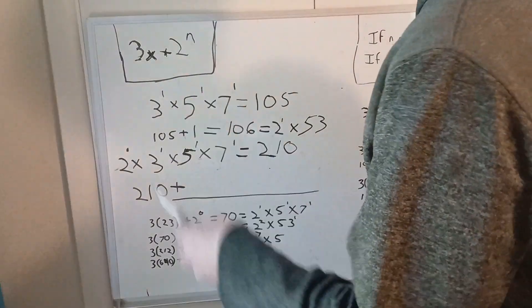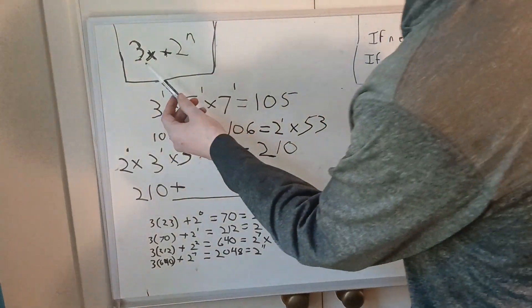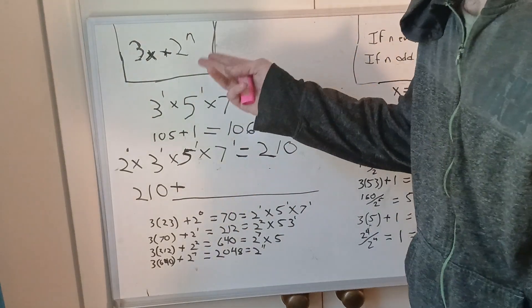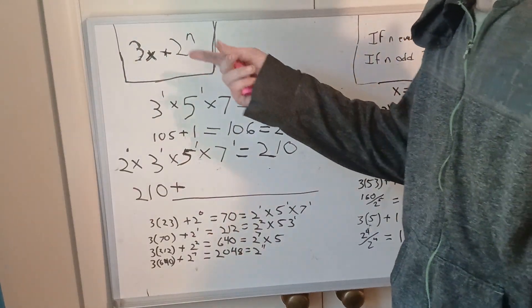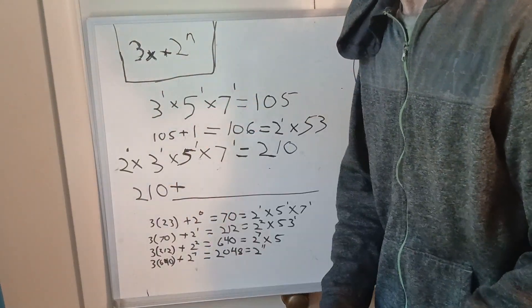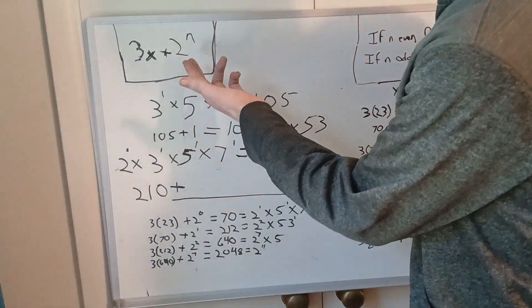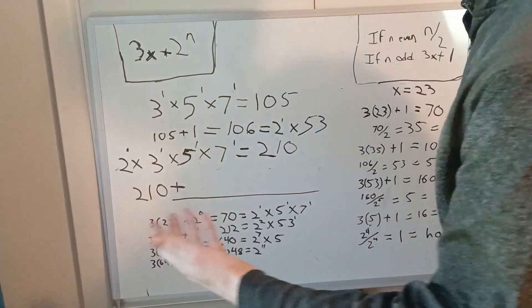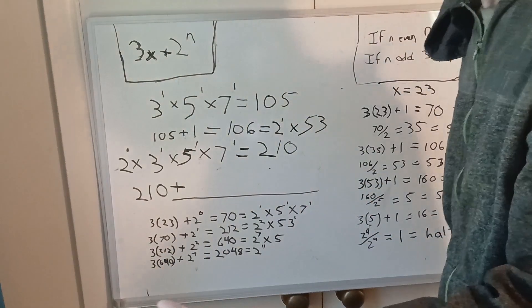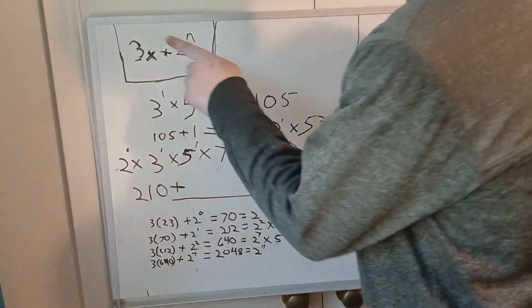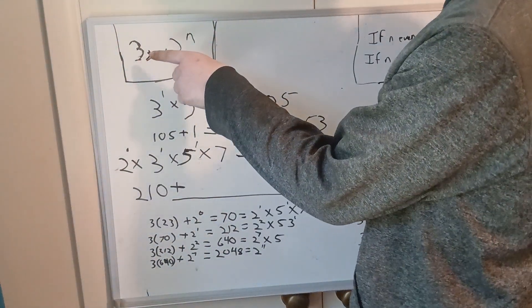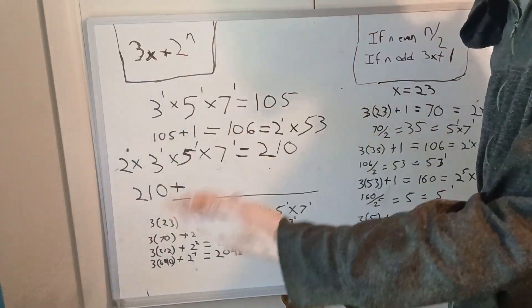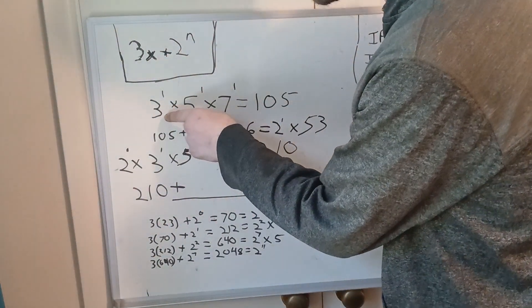First, defining a function 3x plus 2 to the n, where 2 to the n is the largest power of 2 dividing x. So if x is odd, then that would be 2 to the power of 0, because that's the largest power of 2 dividing x. So we're going to consider an odd number, and since the Collatz conjecture automatically injects 3 into the prime factorization, I'm going to use 3 in the prime factorization when I consider the numbers.